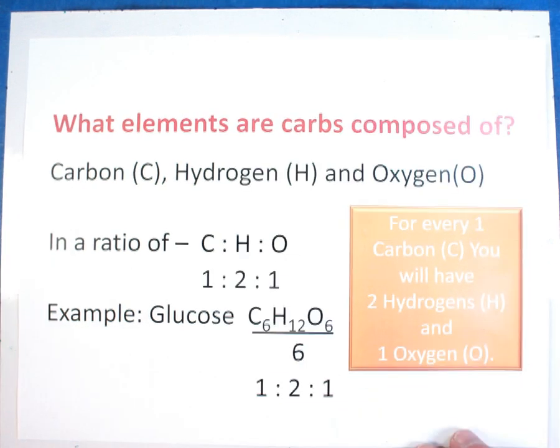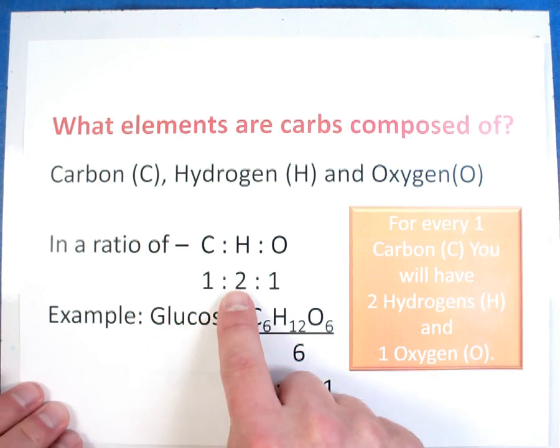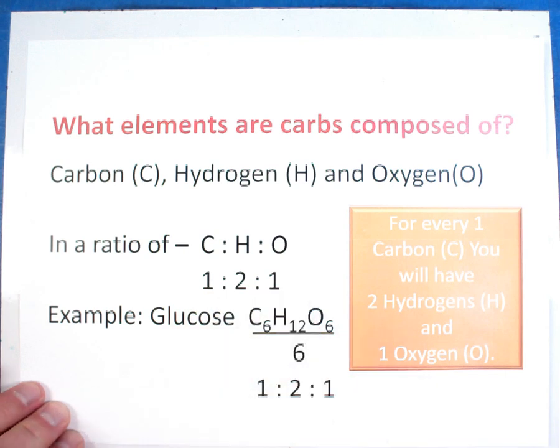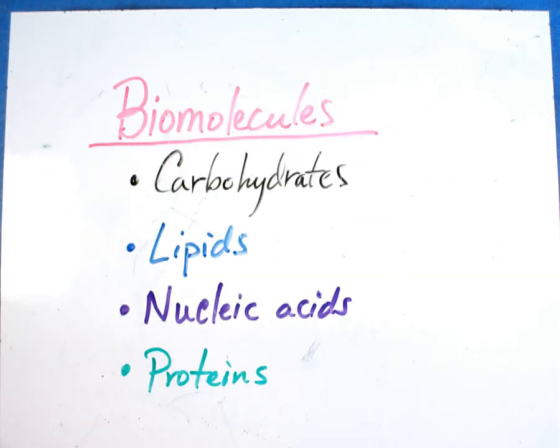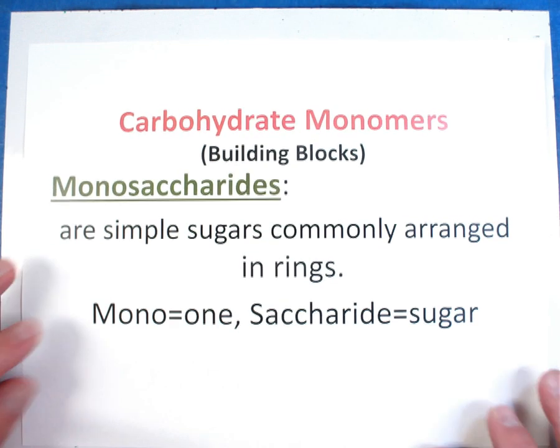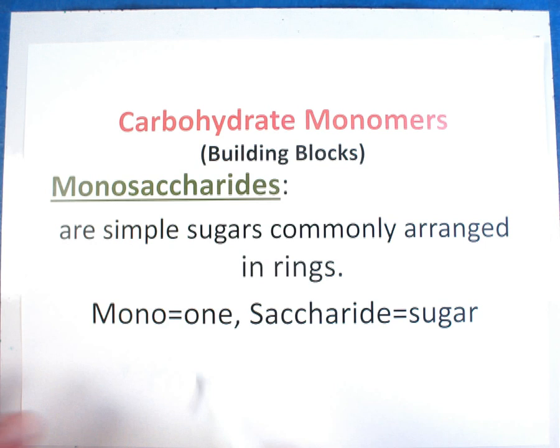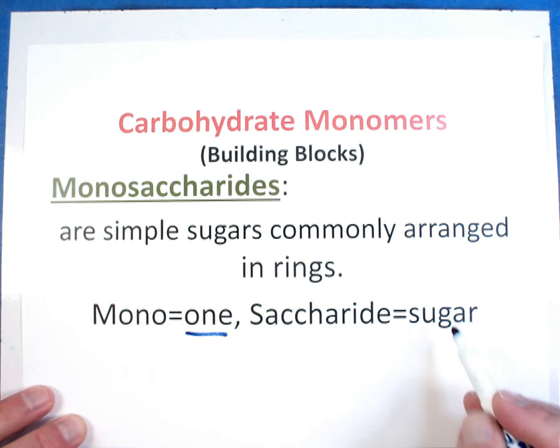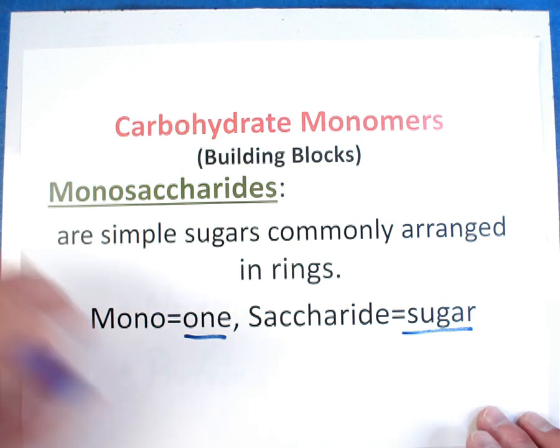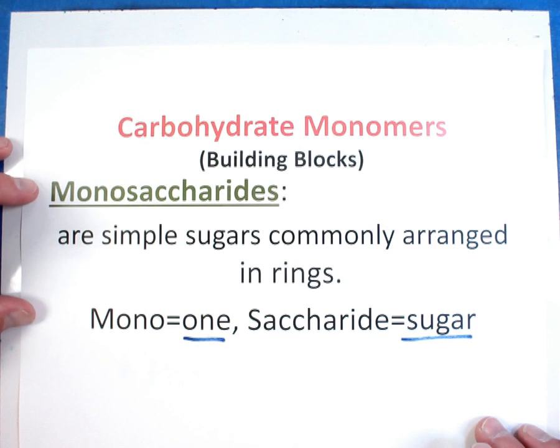As we go through the rest of these molecules, you're going to start looking at some of them and think, wow, those look so similar. You want to look for shortcuts like this that help you know the difference. One to two to one. Carbohydrate monomers or simple sugars. The first are called monosaccharides. Mono means one, and saccharide means sugar. So it means one sugar.